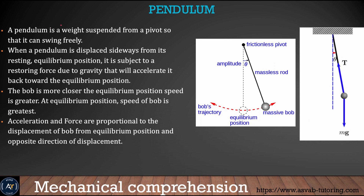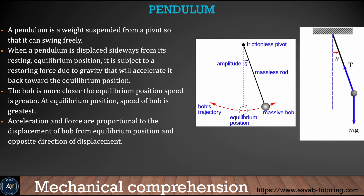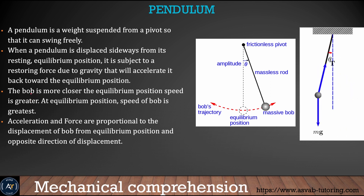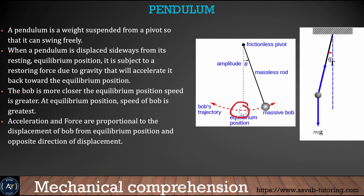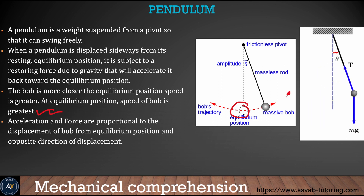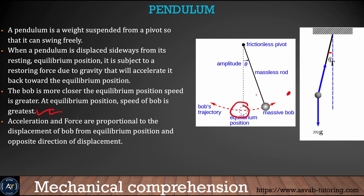The last thing we learn in this video is the pendulum. The most important thing to know about a pendulum is where the maximum speed of the bob is and where the minimum speed is. The maximum speed of the bob is at the equilibrium position — the closer the bob is to equilibrium, the greater its speed. The speed of the bob is zero at the maximum point.